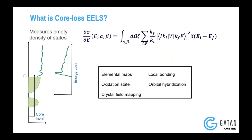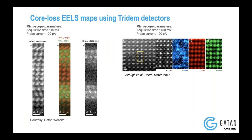This was what was done previously with the Tridiem detectors, which were the previous generation before K3. You could see two examples where you could map out the elements in a perovskite oxide material. But if you notice the acquisition time for both of these, it was very large. And these large acquisition times often result in different kinds of artifacts — for example, you can have oxygen defects in the material because of the high dose of the electron beam, or drifts in the material.